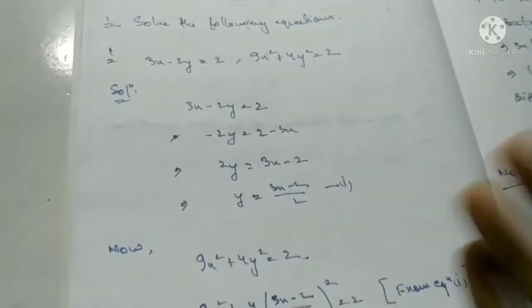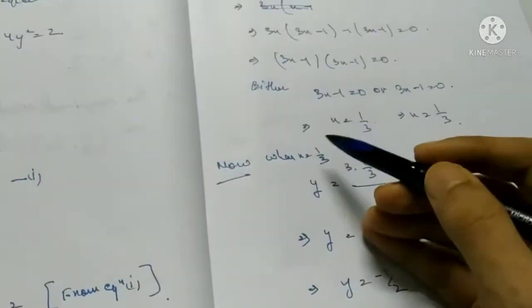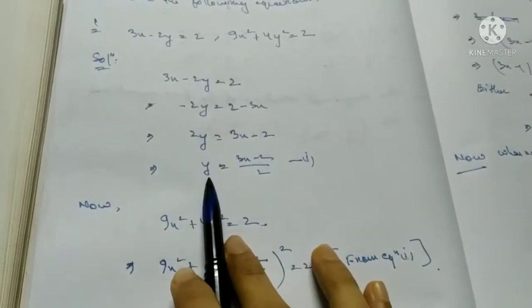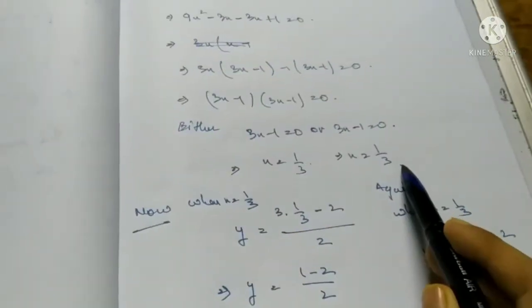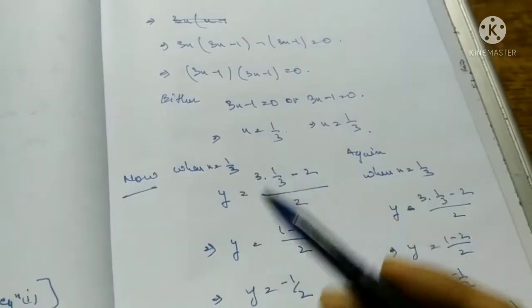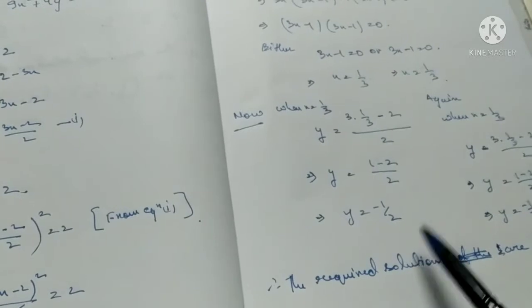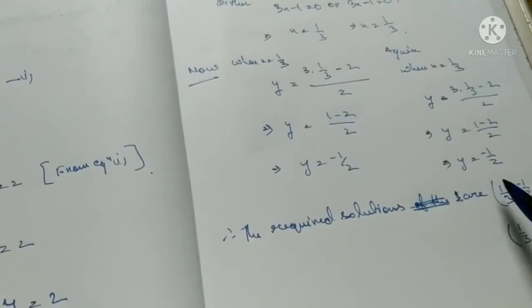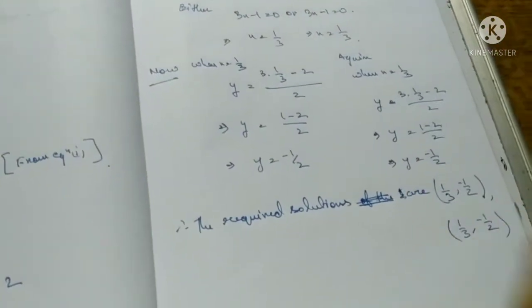The technique: from the first equation take out one variable's value and substitute it into the second equation to get a quadratic equation. Here I took out y and put it in the second equation, getting 9x squared minus 6x plus 1 equals 0, found x equals 1/3, then y equals minus 1/2.